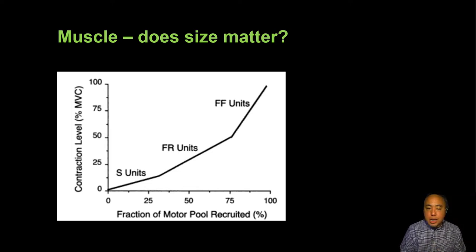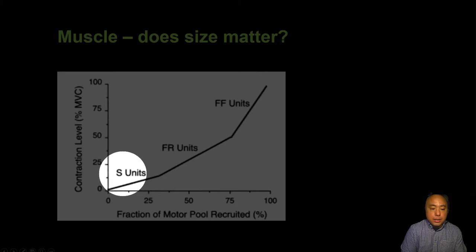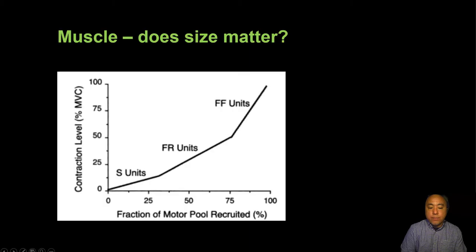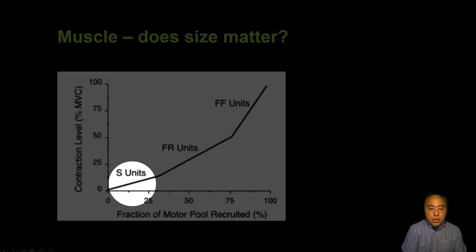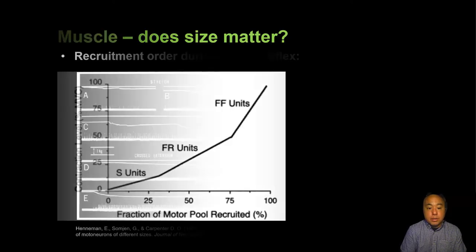If you've taken anatomy and physiology or mammalian physiology, a lot of what I'm going to talk about with relation to muscle contraction will be review for you. These are the three basic types of motor units: the S or slow units, followed by the FR — fast fatigue resistant units — and then the fast fatigable units. You can see that motor units are activated according to the force demands of a particular muscle.